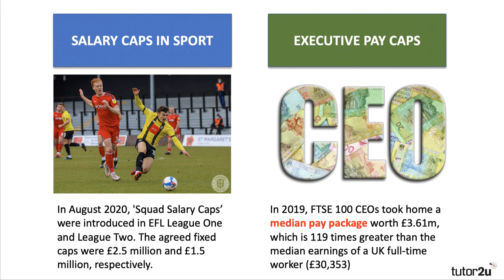A related topic is executive pay, which has become highly topical again. Back in 2019, data suggests that if you take the chief executive officers of the FTSE 100 companies, they took home a median pay package worth just over £3.5 million — and that's 120 times greater than the median earnings of a full-time worker, just a tad over £30,000. So by January the 4th or 5th, a CEO has earned in the first few days of the year what a median worker in the UK earns full-time in a year.